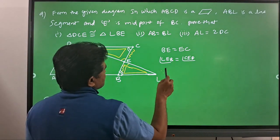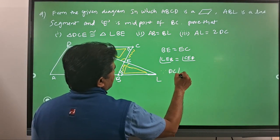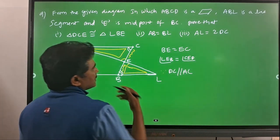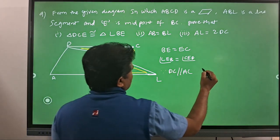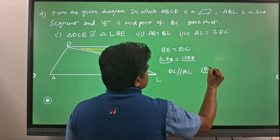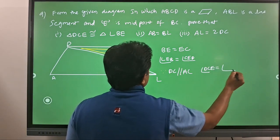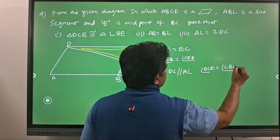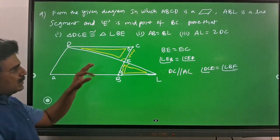Since DC is parallel to AL, the angles at the transverse cutting give us angle DCE equals angle LBE. These two are equal.